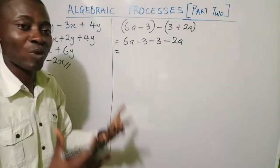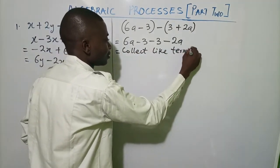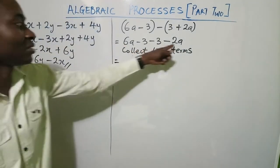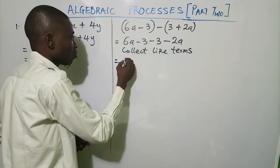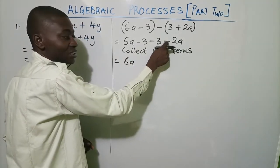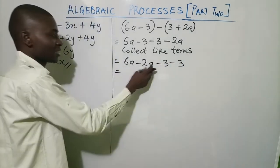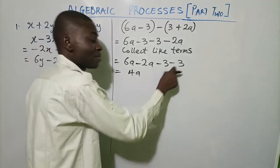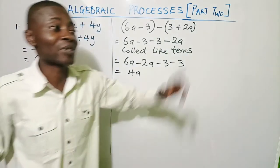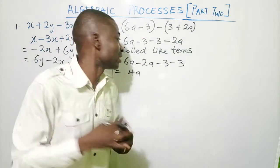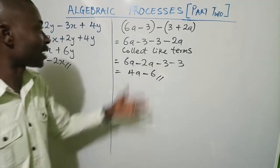From here we collect like terms — bringing together those that are common. We have 6a and minus 2a; those are common. And we have minus 3 and minus 3. So: 6a minus 2a gives 4a. For the constants, I owe you 3 and I owe another person 3 — altogether I owe 6 — so minus 3 minus 3 equals minus 6. The answer is 4a minus 6. You have simplified the expression.